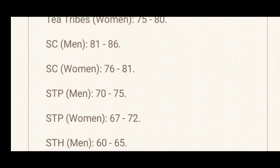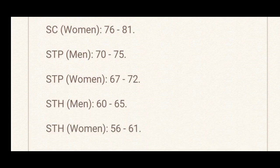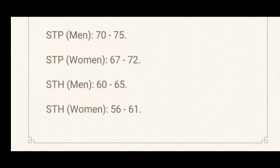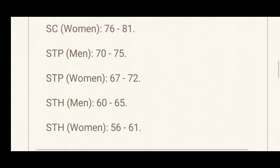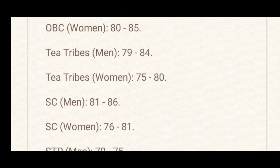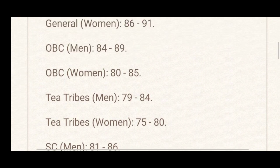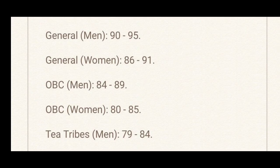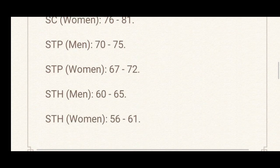Scheduled Caste Women: 76–81, Scheduled Tribe Plains Men: 70–75, Scheduled Tribe Plains Women: 67–72, Scheduled Tribe Hills Men: 60–65, Scheduled Tribe Hills Women: 56–61. For PwBD candidates, the cutoff is approximately 50–60.